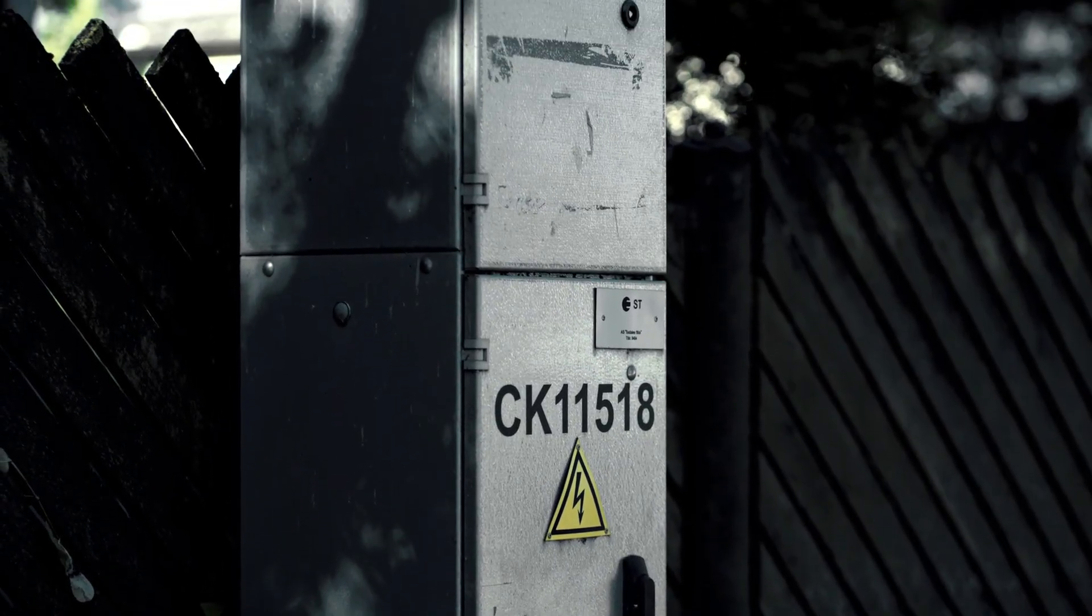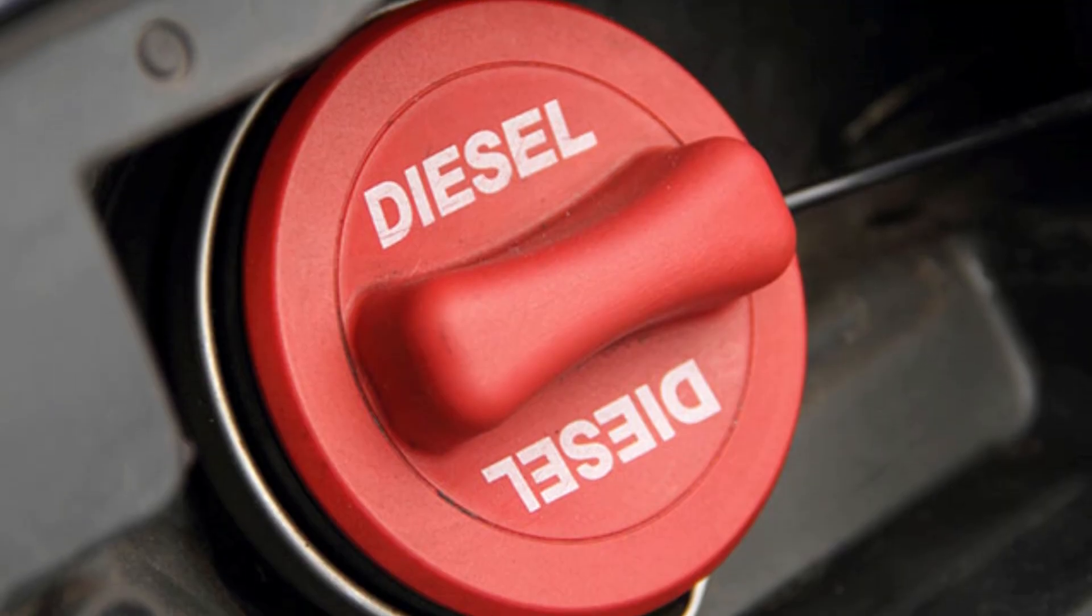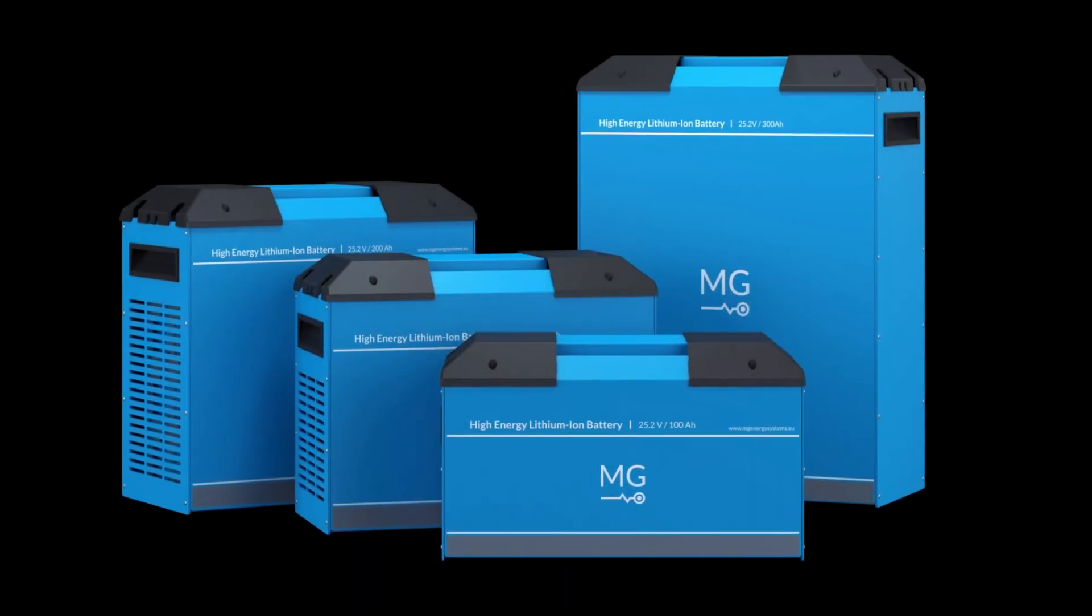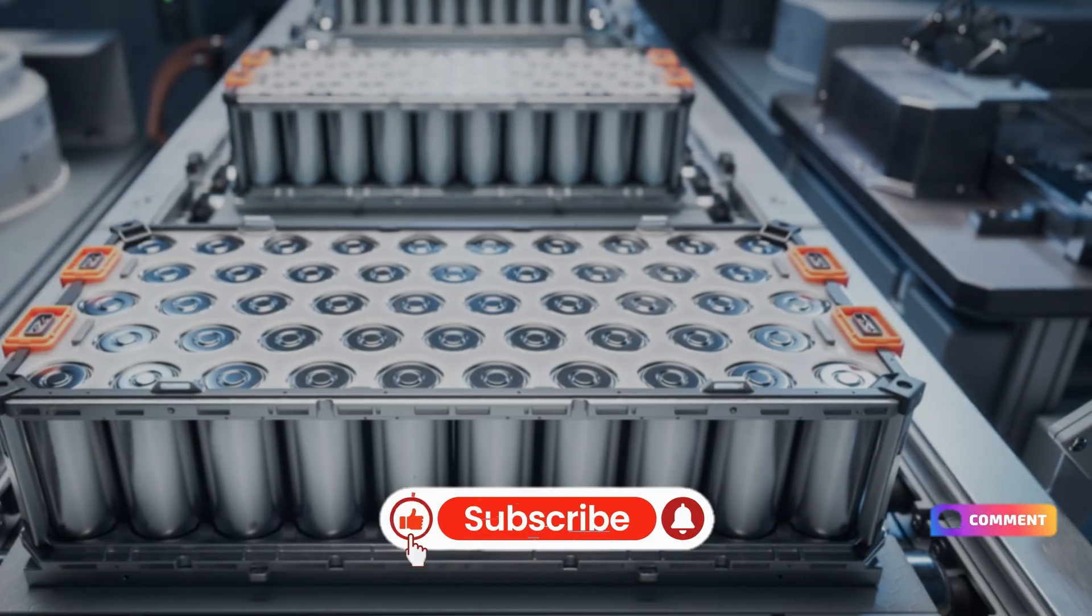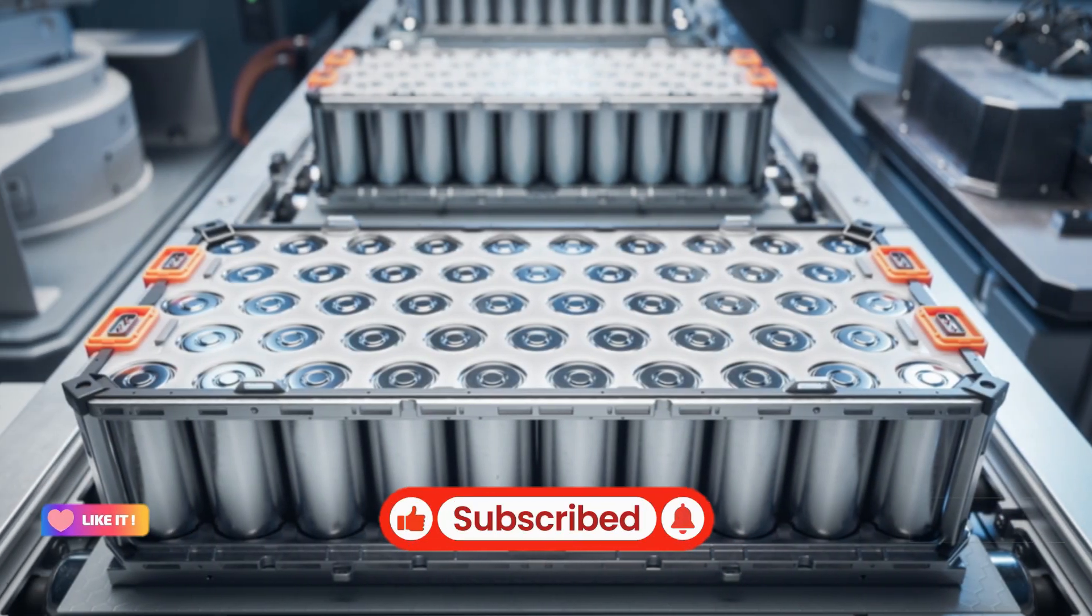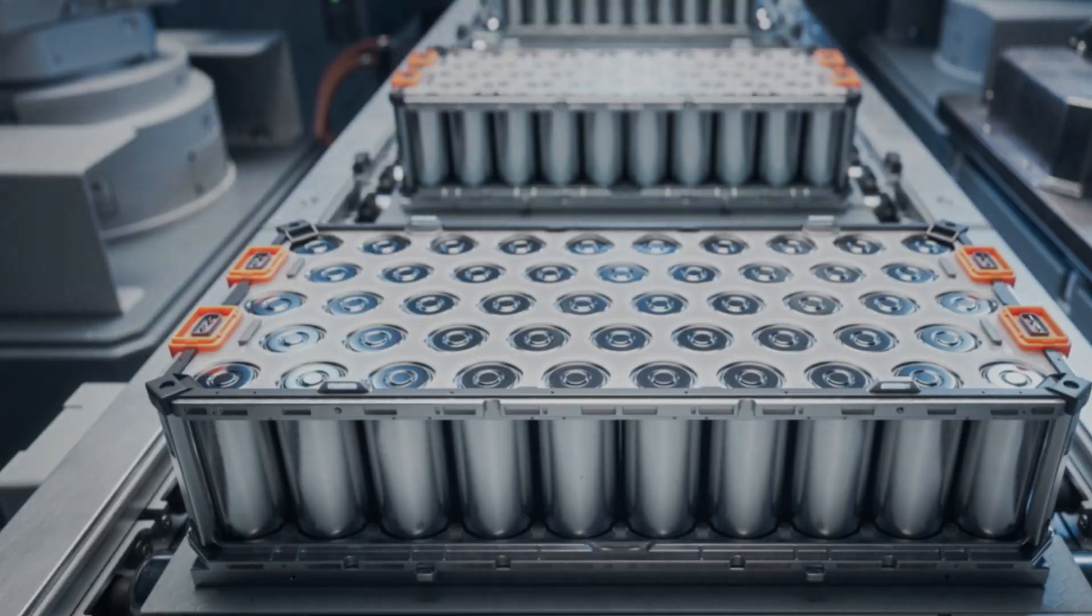Let's talk numbers. 100 kilowatt hours of energy in the form of diesel weighs about 8.5 kilograms. But to store the same amount using the most energy-dense lithium battery tech, NMC, you'd need a battery weighing 660 to 700 kilograms. That's a huge difference.